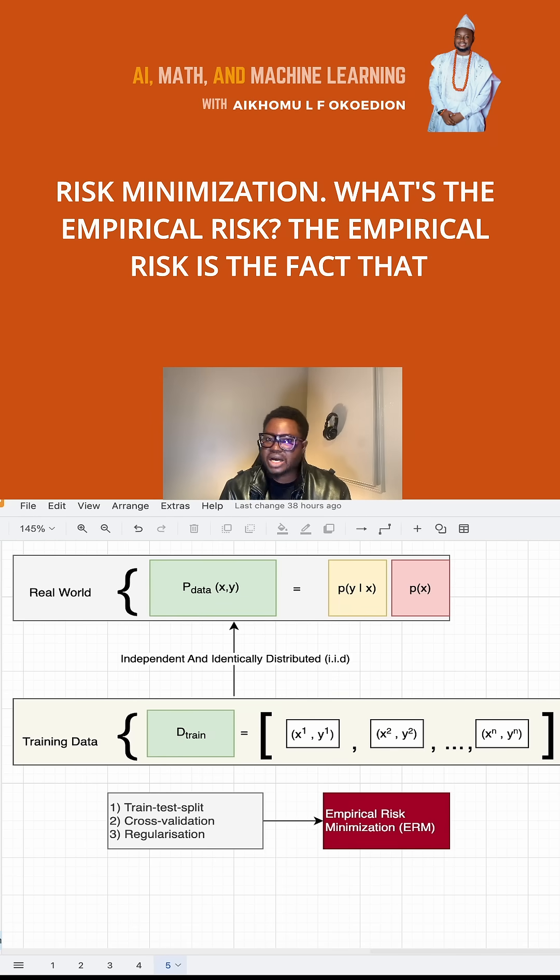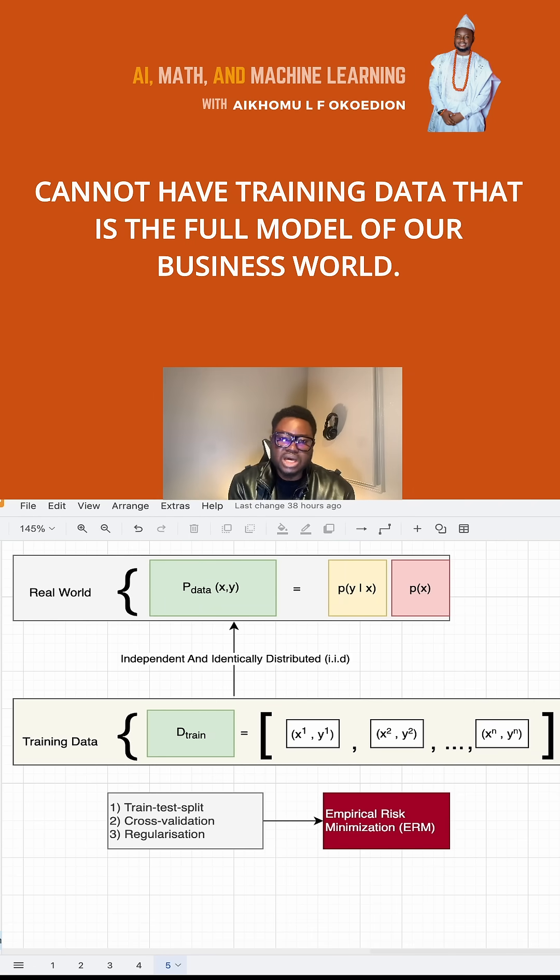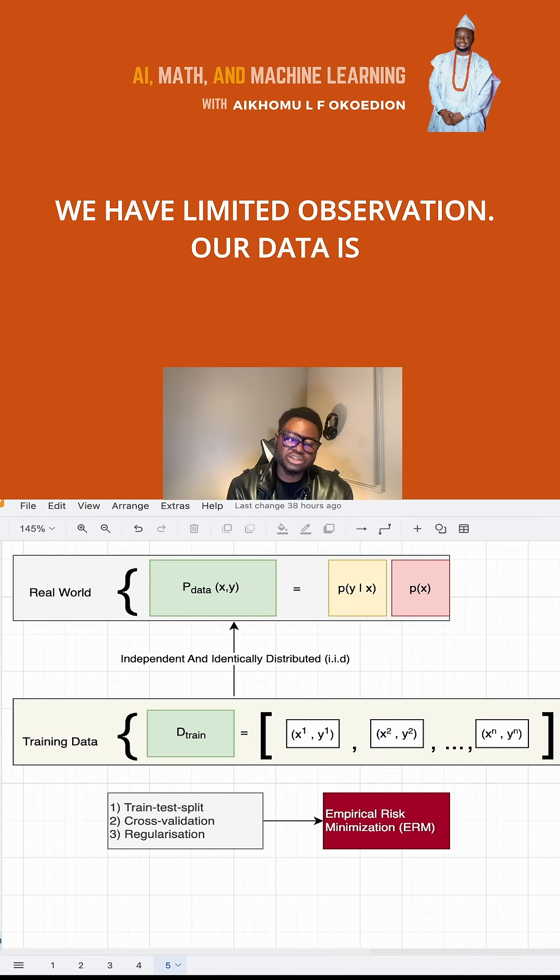The empirical risk is the fact that we have something that is not the real thing. We cannot have data that is the full model of our business world. We have limited observation.